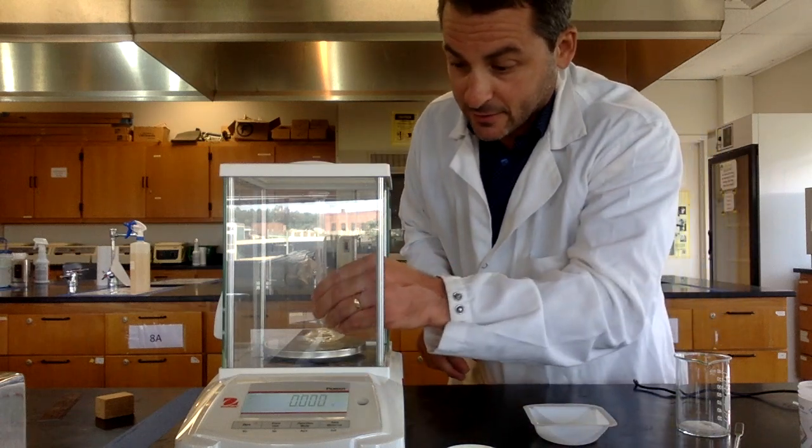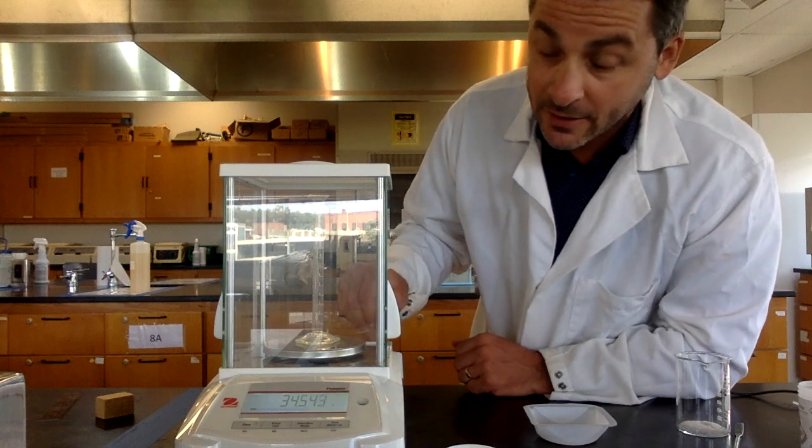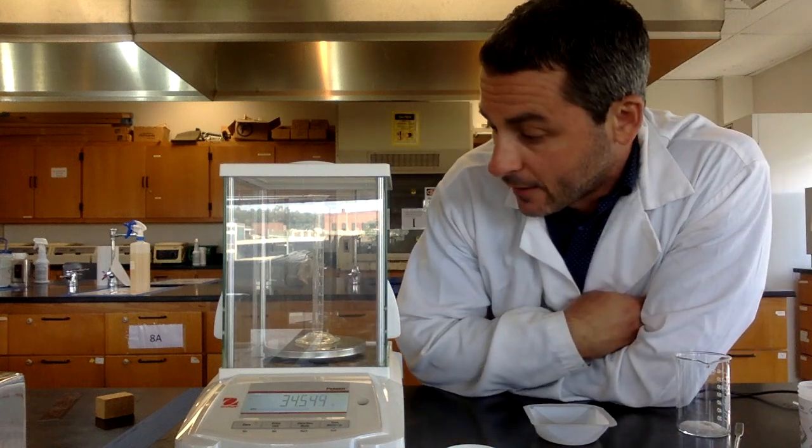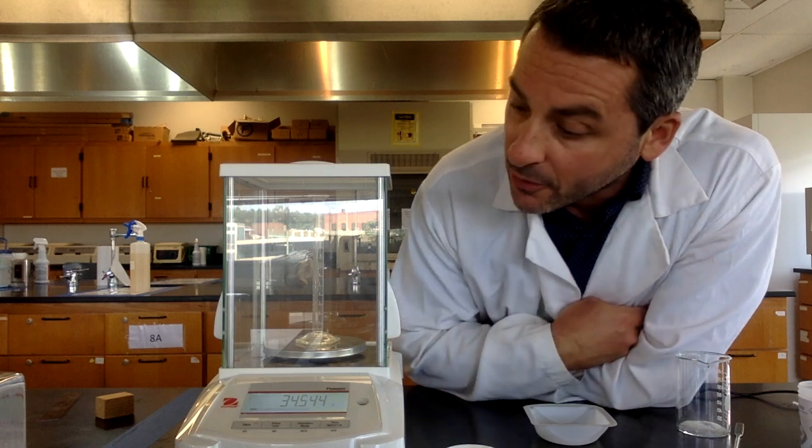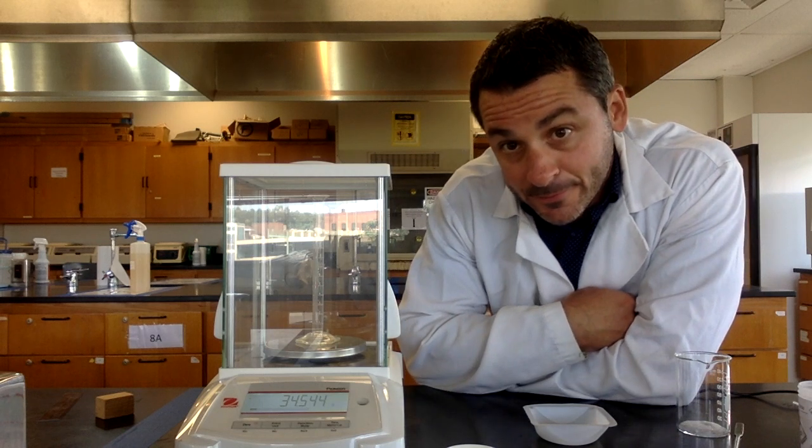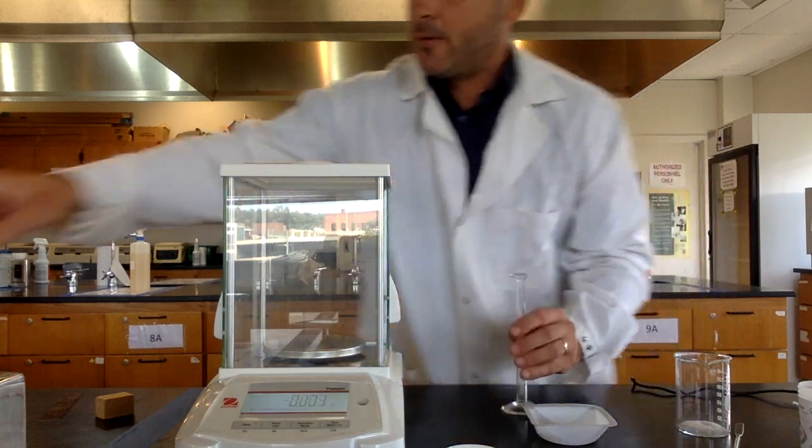You can also weigh liquids in the same exact fashion as we will do in the density lab. You're going to take a graduated cylinder and weigh it. Always make sure that the balance says zero before you put that on there. Now I record the mass, 34.544 grams.